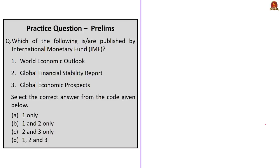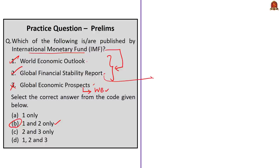Now look at this question: which of the following are published by the International Monetary Fund? World Economic Outlook, Global Financial Stability Report, Global Economic Prospects. The correct answer is option B — one and two only. The World Economic Outlook and the Global Financial Stability Report are released by the IMF, whereas the Global Economic Prospects is published by the World Bank. The Global Financial Stability Report provides an up-to-date assessment of global financial markets and prospects, and highlights imbalances and vulnerabilities which could pose risks to financial market stability across the world.